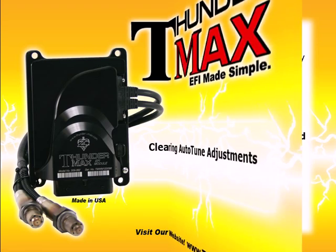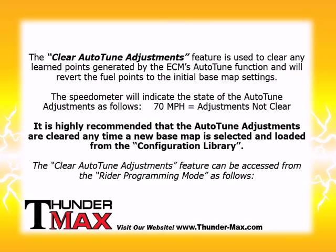Clearing Auto-Tune Adjustments. The clear auto-tune adjustments feature is used to clear any learned points generated by the ECM's auto-tune function and will revert the fuel points to the initial basemap settings. The speedometer will indicate the state of the auto-tune adjustments as follows: 70 mph equals adjustments not cleared. It is highly recommended that the auto-tune adjustments are cleared any time a new basemap is selected and loaded from the configuration library.